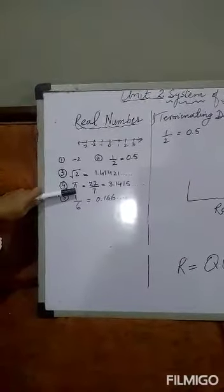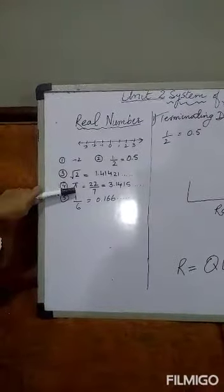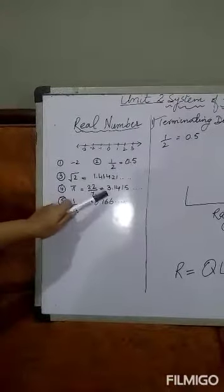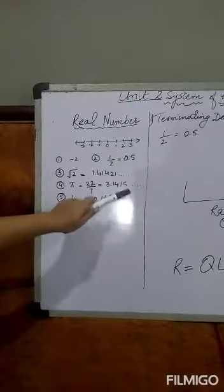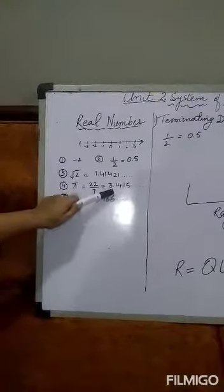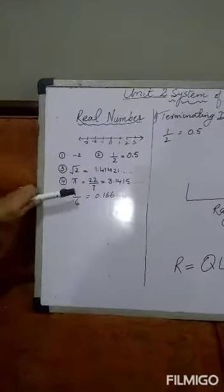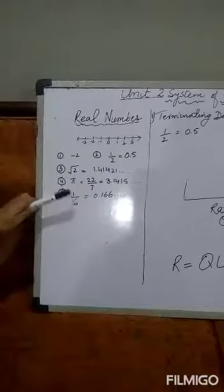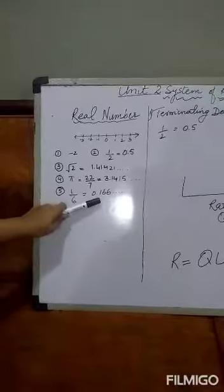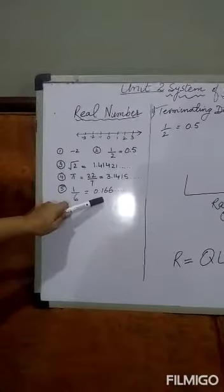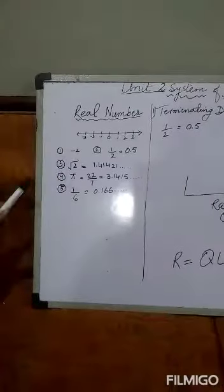Next example is pi, which in geometry equals circumference upon diameter, whose value is 22/7, approximately equal to 3.1415, continuing on and on. The approximate value 3.14 can be plotted on the number line, so pi is a real number. Similarly, 1/6 equals 0.1666... going on and on, so it can also be plotted on the number line.